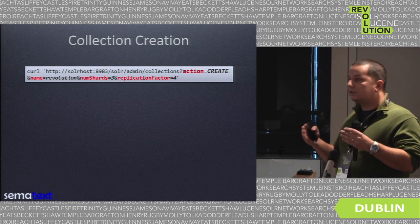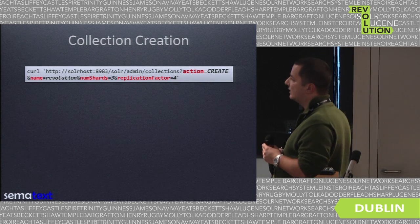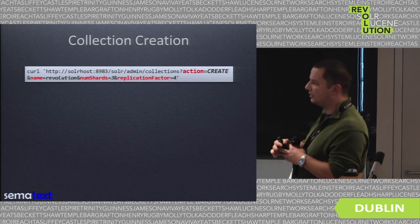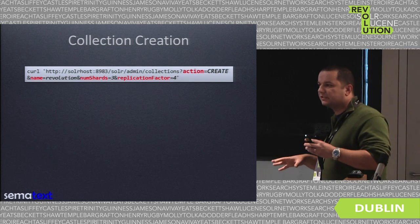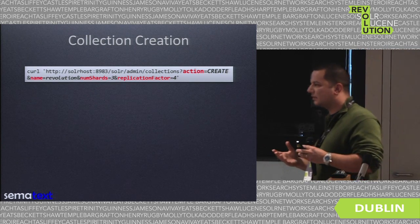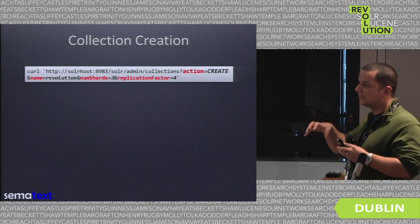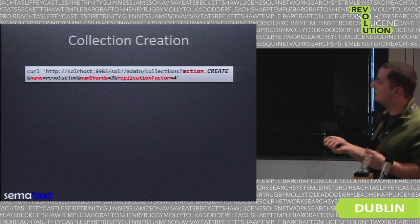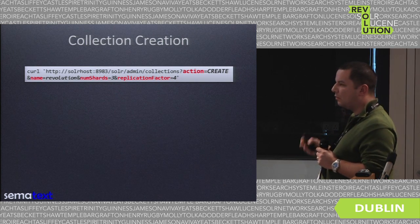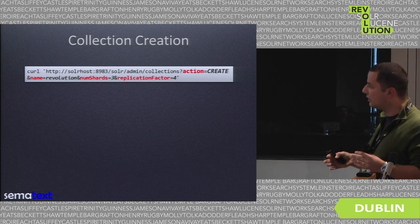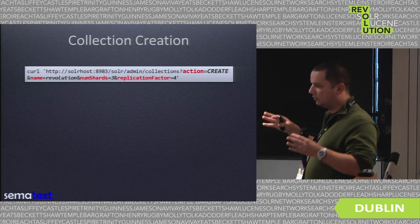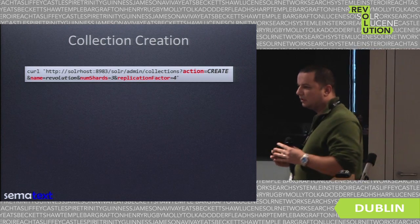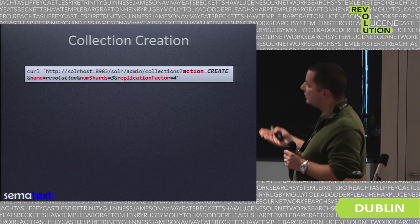Let's stop here for a bit. The num_shards parameter tells Solr that the collection should be divided into three physical shards — basically three cores will be created on your cluster. The replication factor tells Solr how many physical copies of each shard should be created. So after this command, if the cluster is capable, we would have 12 shards — that's num_shards multiplied by the replication factor.